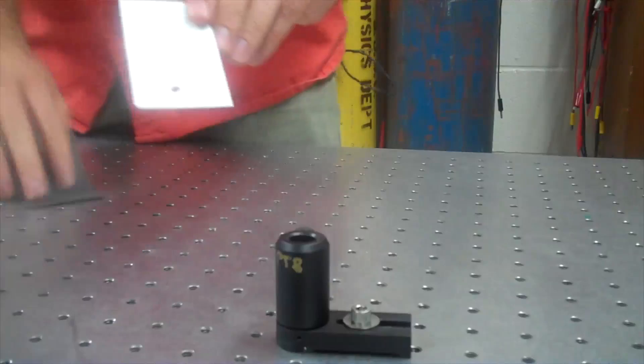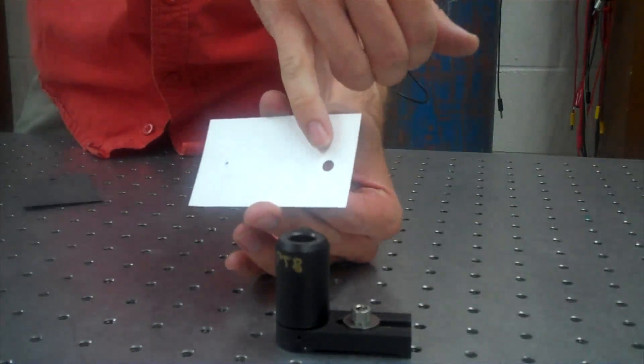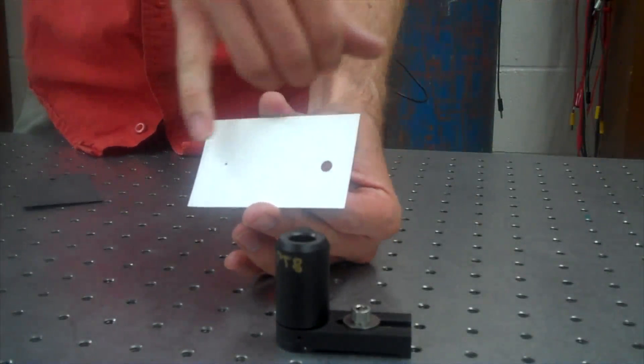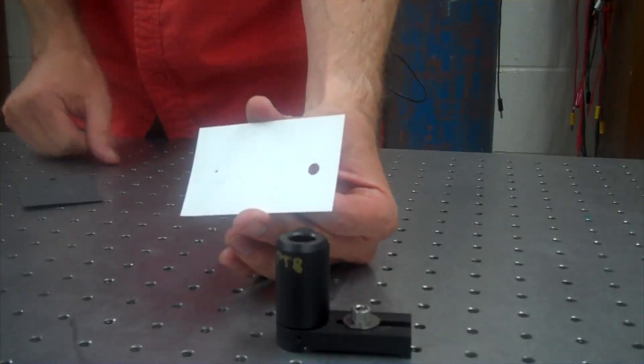To do this, we're obviously going to need a steering mirror and the other tool is a card that we've punched a hole in. Typically, a business card will work quite well. I like to punch a large hole using a paper punch on one side and a small hole using a paper clip or a ballpoint pen on the other.